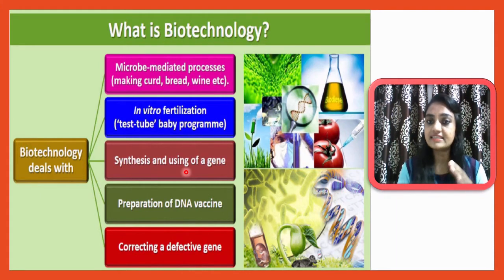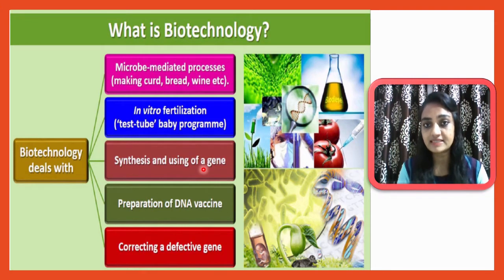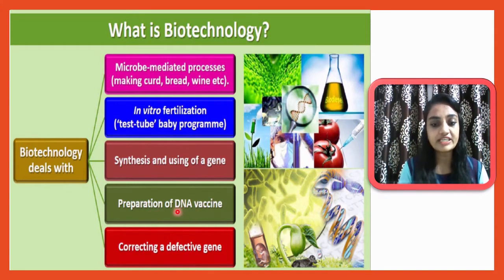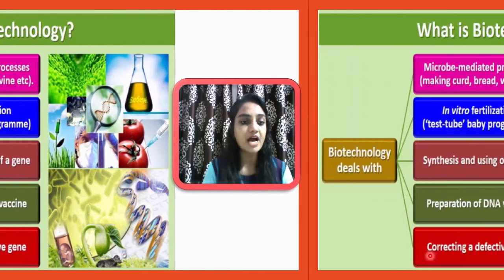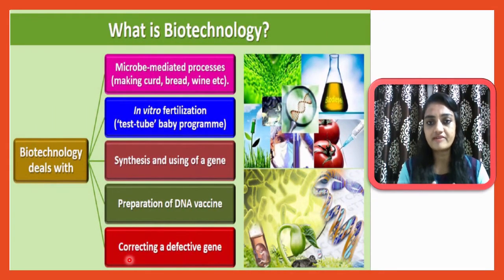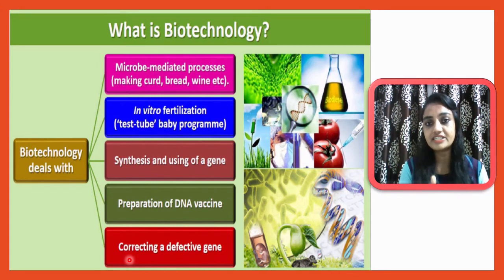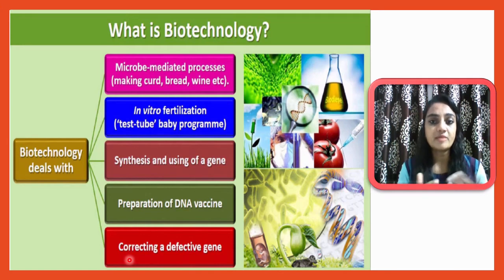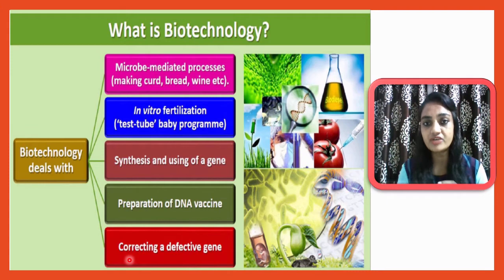Biotechnology also enables synthesis and use of genes — you can artificially synthesize DNA inside the laboratory using PCR and amplification techniques. It includes preparation of DNA vaccines, and correcting defective genes. Many hereditary diseases like diabetes, hemophilia, and thalassemia are caused by defective genes, and biotechnology can be used to repair those genes.